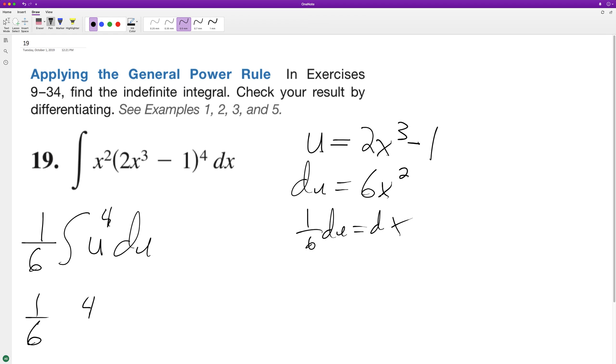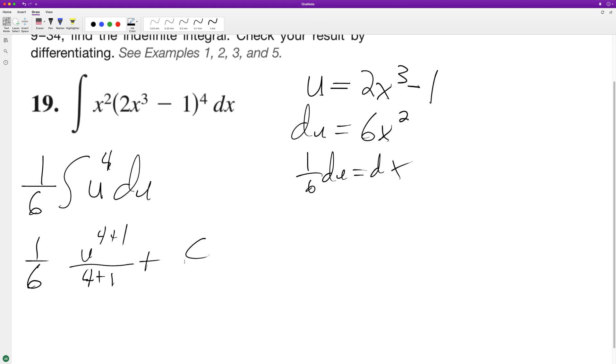u to the 4th plus 1 over 4 plus 1, and then plus C. So this gives us one-sixth times u to the 5th over 5 plus C. So we end up with u to the 5th over 30 plus C.